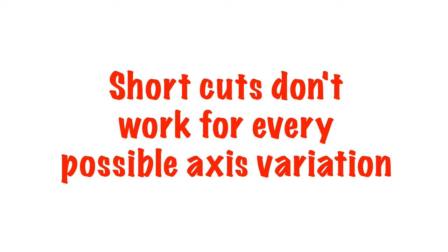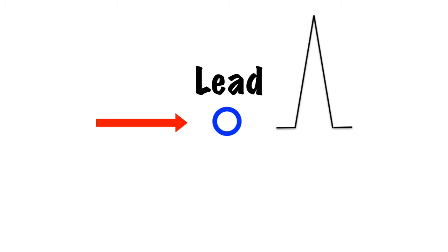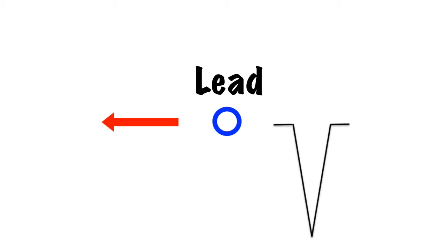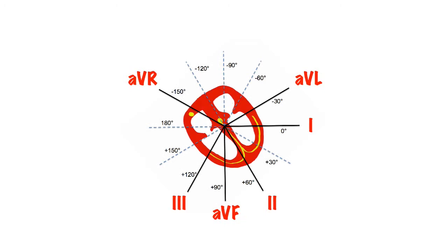How do we calculate the axis? The more an impulse travels towards a lead, the greater the amount of positive deflection compared to negative deflection it causes. The more it travels away from the lead, the greater the amount of negative deflection compared to positive. If the impulse is at 90 degrees to the lead, you get an equal positive and negative deflection. What you need to do is find a lead where you have an equal amount of positive and negative deflection, or as close to as possible. We know that the impulse must be moving at 90 degrees to this lead, but it could be in either direction.